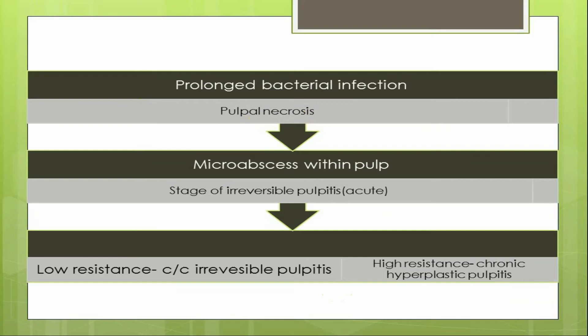Necrosis occurs because of disturbance in the nutritional supply. Leukocytes will die and pus forms - micro-abscesses will be formed within the pulp. This is the stage of acute irreversible pulpitis.